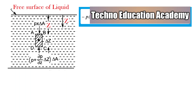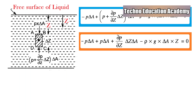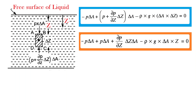Further simplifying this equation: separating the bracket, delta A is multiplied with P and with (del P / del z) into delta Z. So we get minus P into delta A plus P into delta A plus (del P / del z) into delta Z into delta A, minus rho G into delta A into delta Z equals zero. Here minus P into delta A and plus P into delta A cancel out as they are the same term.